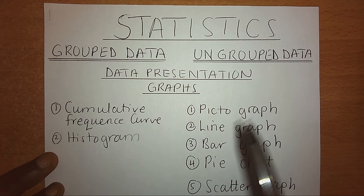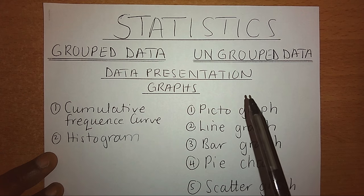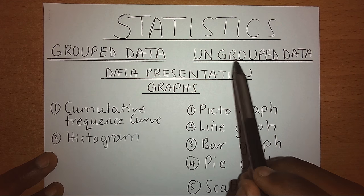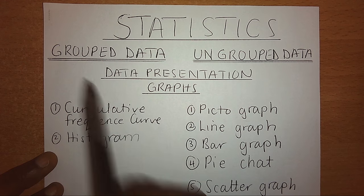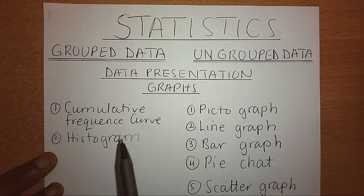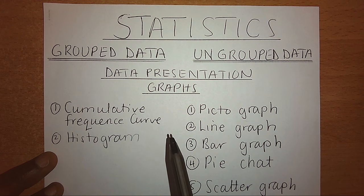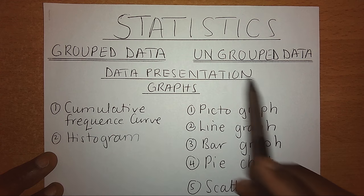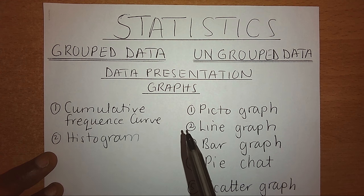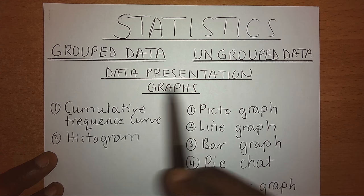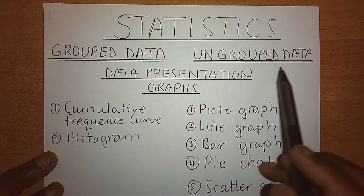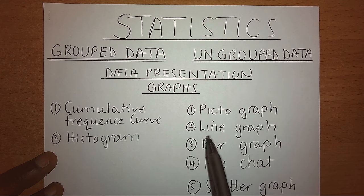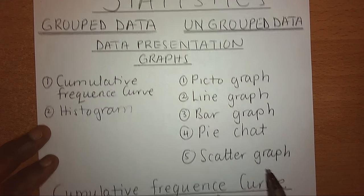We are looking at statistics. Under statistics we have two groups: ungrouped data and grouped data. Today we are going to do data presentation. Usually when you are presenting data, we present on graphs. Under ungrouped data we have the pictograph, line graph, bar graph, pie chart, and scatter graph.